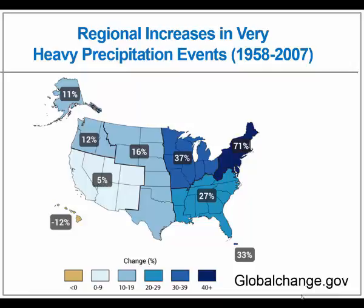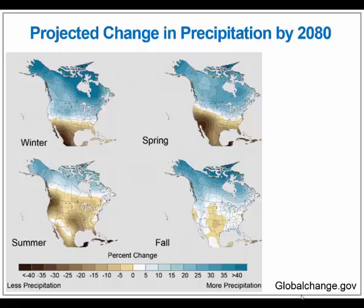Weather is changing, and we're seeing more heavy precipitation events. They're projecting changes in precipitation — I don't know how much uncertainty there is in this, but whatever happens, it's going to change, and there will continue to be variability. The question is how can we manage our nitrogen to account for that variability.